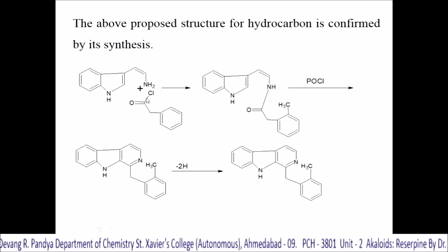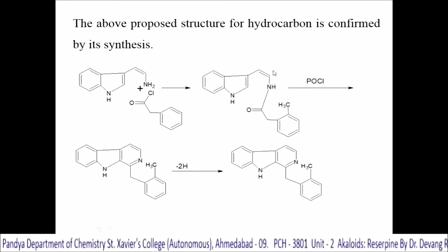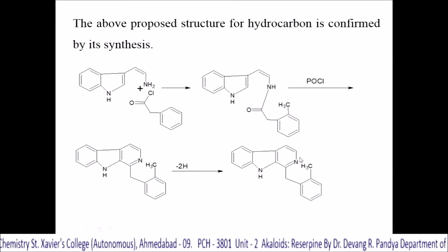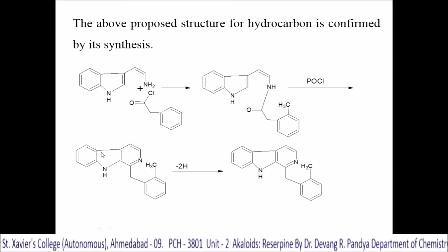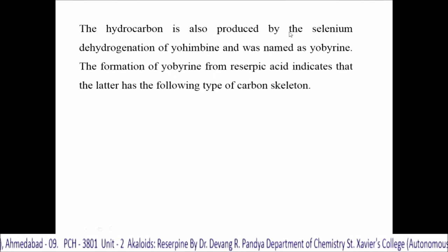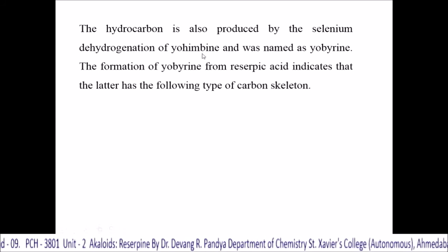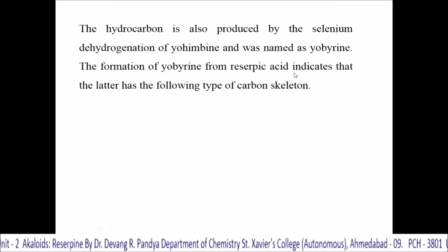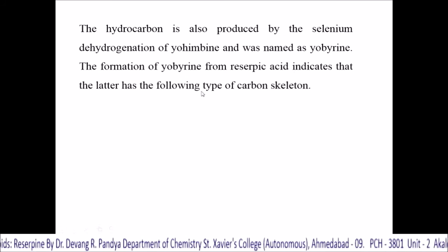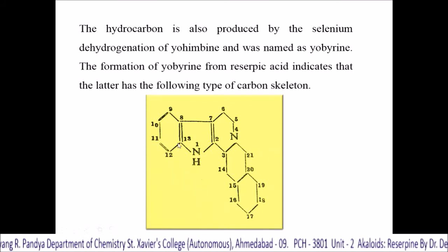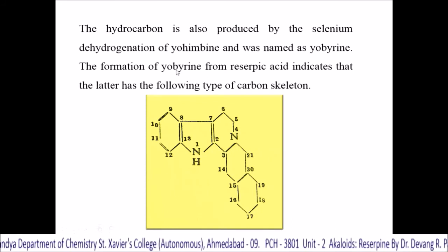The synthesis involves treating a primary amine with an acid chloride to give an amide linkage, which is further treated with phosphorus oxychloride to give a derivative that on reduction yields the hydrocarbon skeleton. This hydrocarbon is also produced by selenium dehydrogenation of yohimbine and was named yobirine. The formation of yobirine from reserpic acid indicates that the latter has the following type of carbon skeleton — that of yohimbine or yobirine.